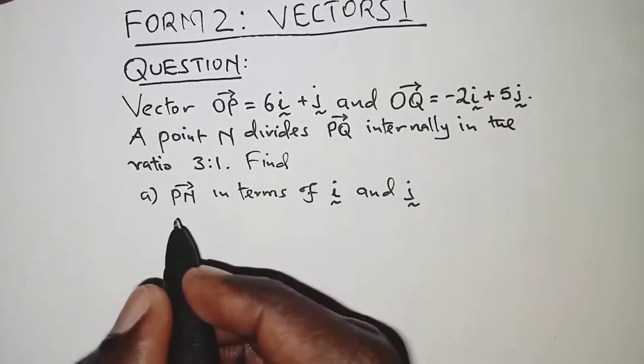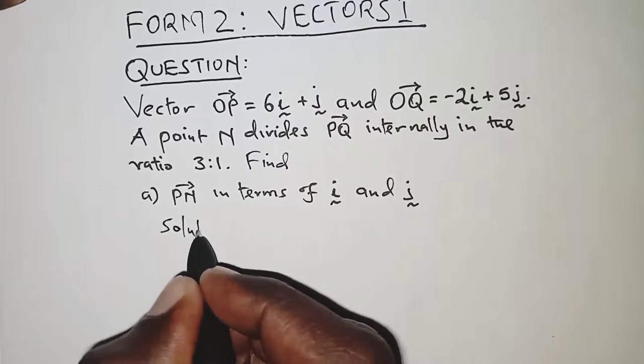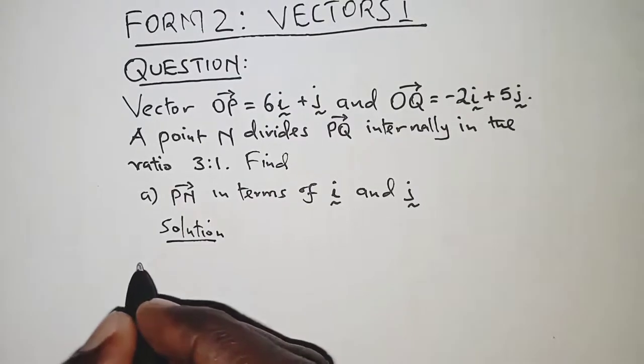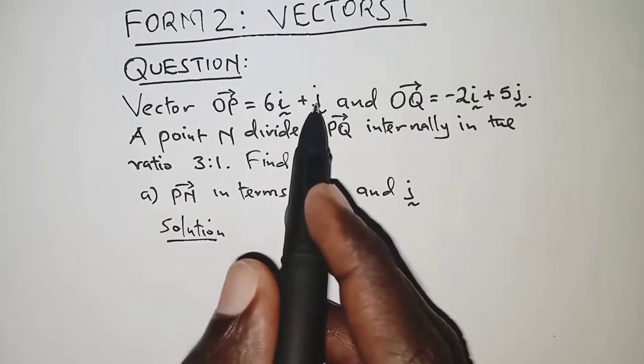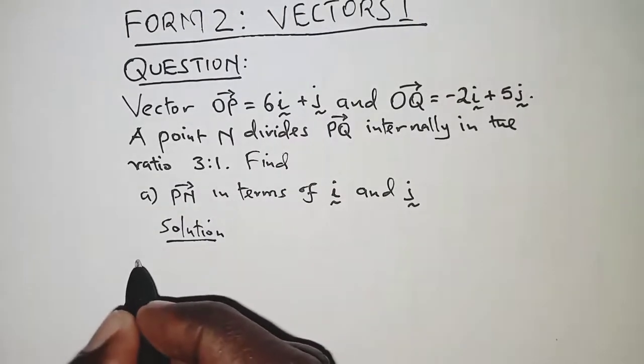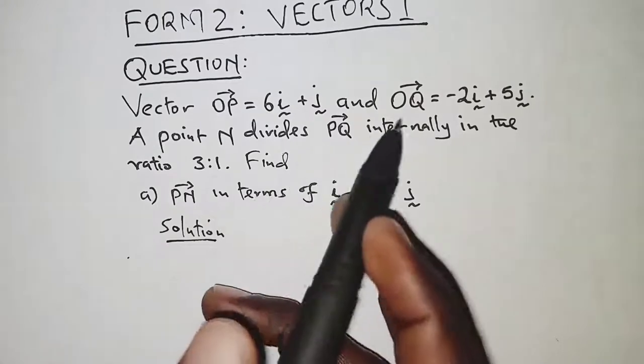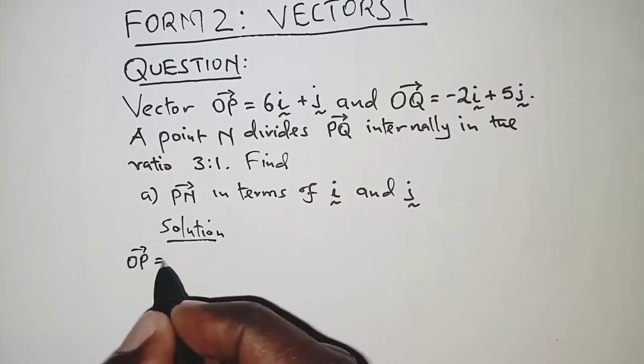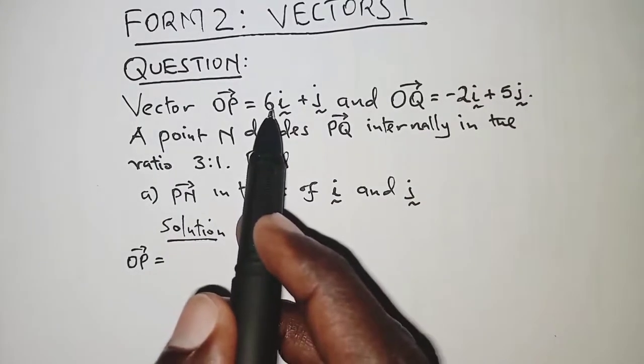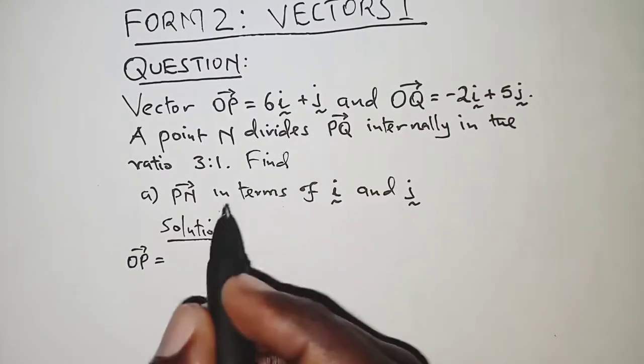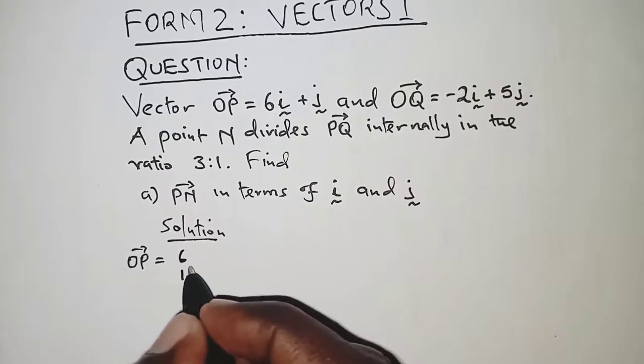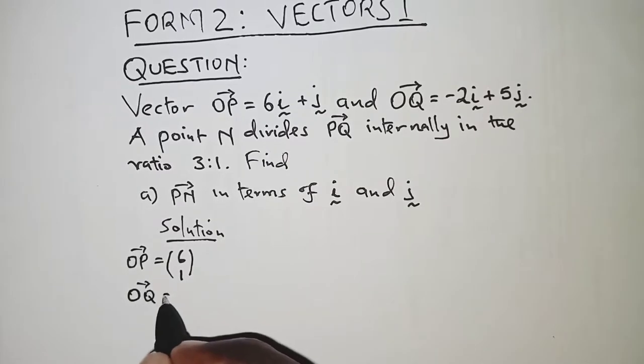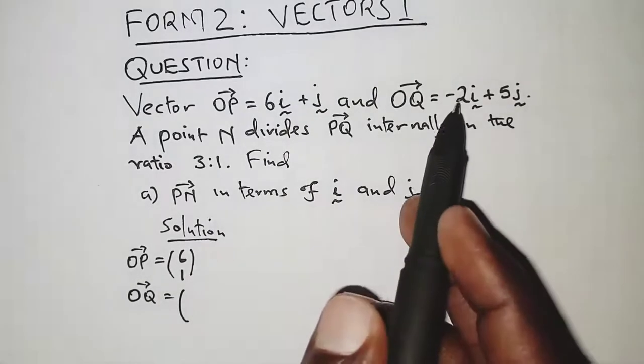So here the solution would be: first of all we are told that OP is 6i plus j. So first we will write OP and OQ as column vectors. So OP will be given as 6i plus j as a column vector, that is (6, 1). And for OQ, we will have (-2, 5).